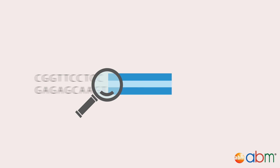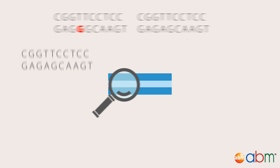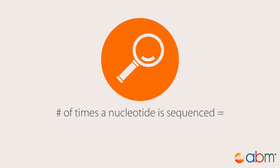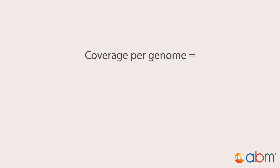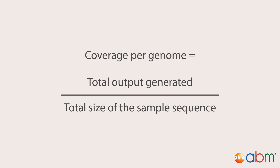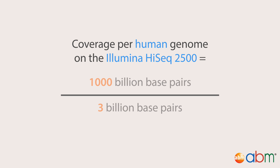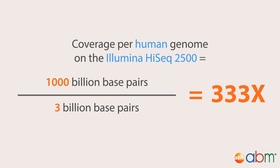The way to circumvent NGS platform limitations is to sequence nucleotides multiple times. The number of times a nucleotide is sequenced is referred to as coverage or depth. Coverage per genome can be calculated by dividing the total output generated in a sequencing run by the total size of the sample sequence. For example, running a human genome, which is approximately 3 billion base pairs, will yield approximately 333 times coverage on the Illumina HiSeq 2500, which has a max output of 1,000 gigabase pairs.